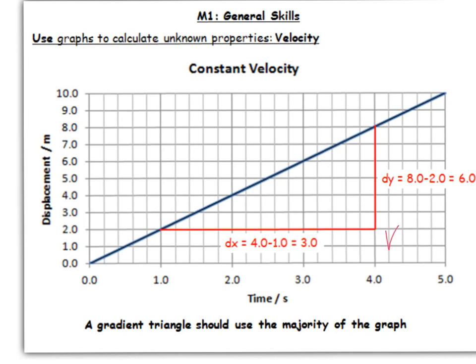So then that would mean you get a velocity of dy over dx to 2.0 metres per second here. Nice and easy there, we've got a straight line graph.